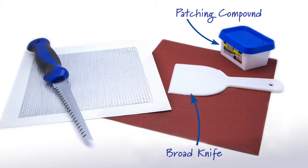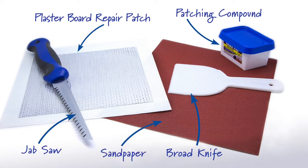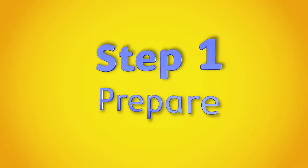Whether you're renting or own your own home, accidents can happen. So here's how to repair an unsightly hole in a wall in just three steps. Here's what you'll need: patching compound, broad knife, plasterboard repair patch, drywall or jab saw, sandpaper, cloth, and matching paint. Step 1: Prepare.